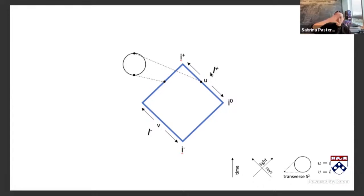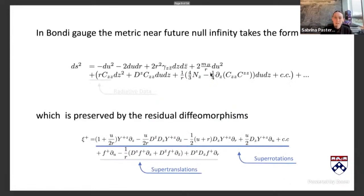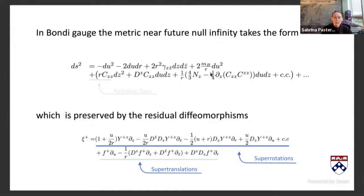In more detail: BMS picked a convenient gauge choice where, going out to null infinity at a surface of fixed u, z, z-bar — where z and z-bar are stereographic coordinates for the celestial sphere — you're on a null geodesic. The free data, the radiative degrees of freedom, are in the C_{zz} part of the metric, which is subleading compared to the round sphere. There's also an angle-dependent piece measuring the analog of the Bondi mass, and similarly the angular momentum aspect.